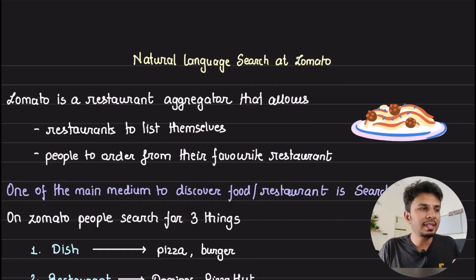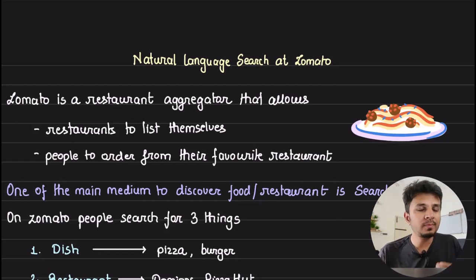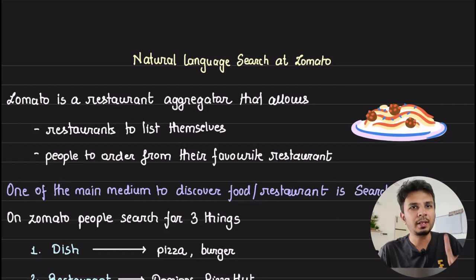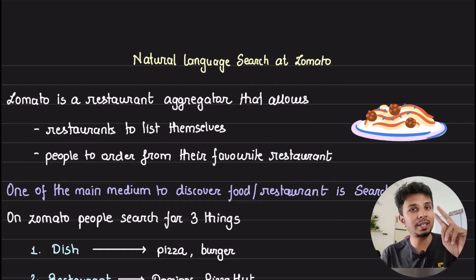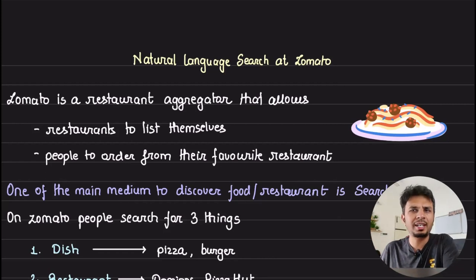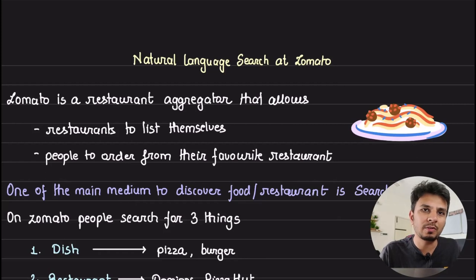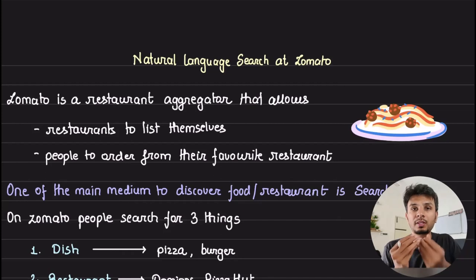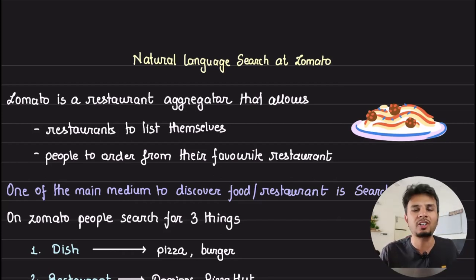Search is one of the most important services, especially for food aggregators like Zomato. An interesting challenge comes when a search query is not homogeneous — instead it contains multiple entities. For example, 'best Domino's pizza near me.' This query contains a restaurant, a dish, and a location. Getting relevant information from a search engine like ElasticSearch with this kind of query is a very interesting problem. In this video, we dive deep into how Zomato identifies the intent of the search query to better its search experience using natural language processing.